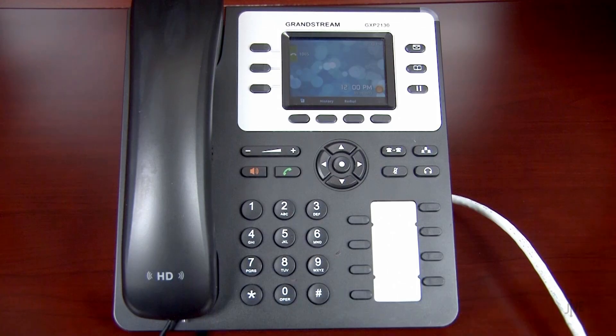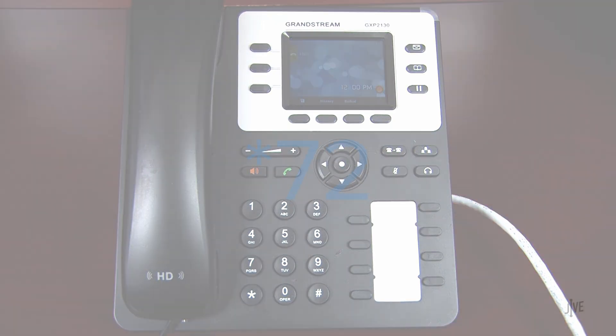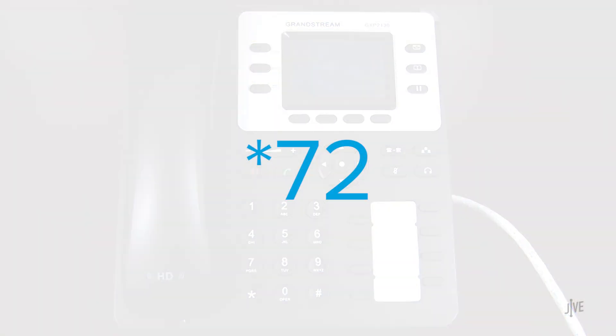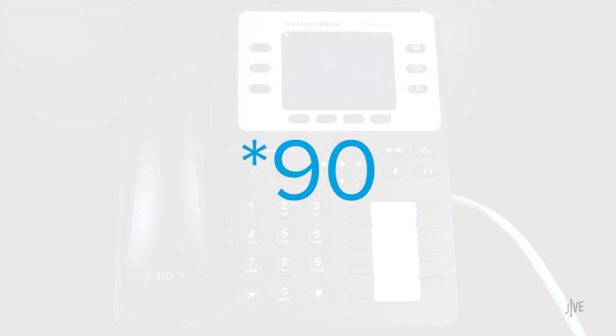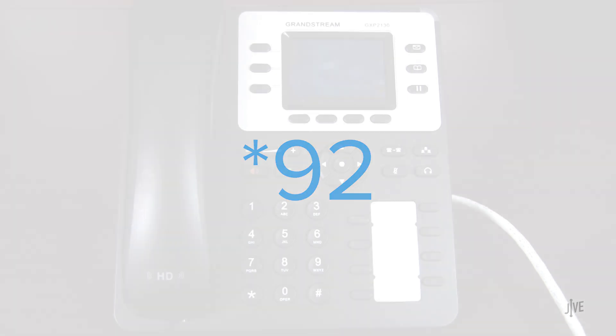Setting up call forwarding on this phone is done by using specific star codes. Star 72 is for All or Unconditional. Star 90 is for Busy. And Star 92 is for No Answer or Delayed.